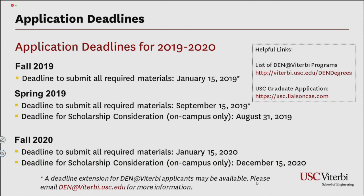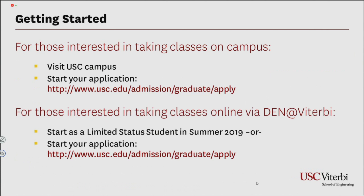The general application deadline for fall 2019 was January 15th, but a deadline extension is available for DEN at Viterbi applicants — contact us for more information. The next available semester to apply is spring 2020, with classes starting in January 2020 and a deadline of September 15th. For on-campus students interested in scholarship consideration, the early scholarship deadline is August 31st for spring 2020 and December 15th for fall 2020. A separate scholarship opportunity is also available for DEN at Viterbi students after formal admission.